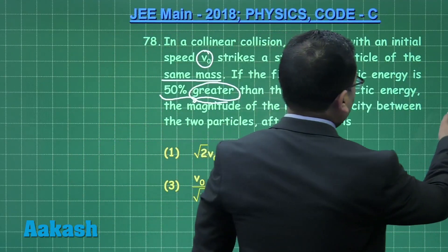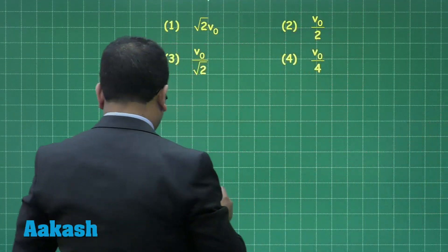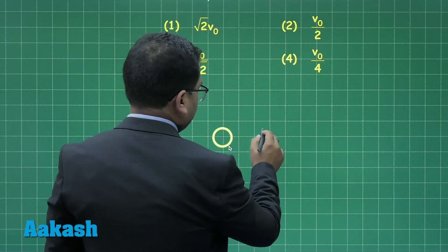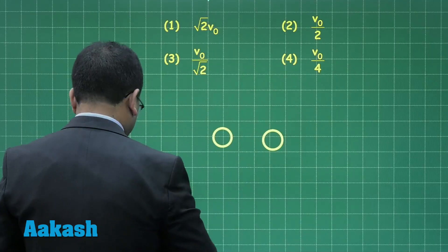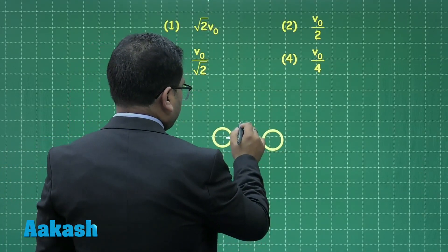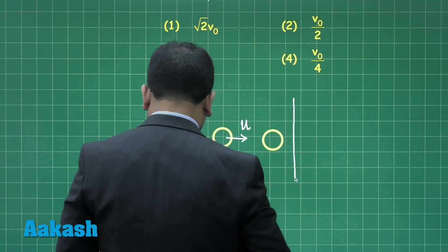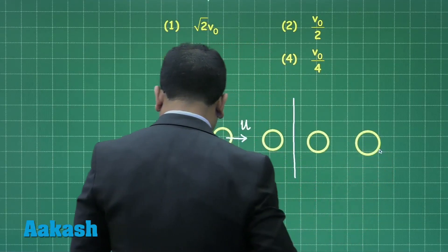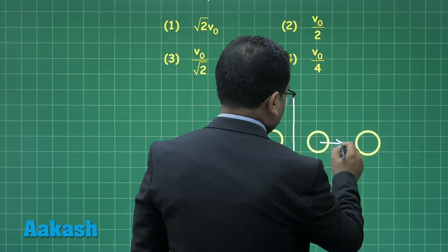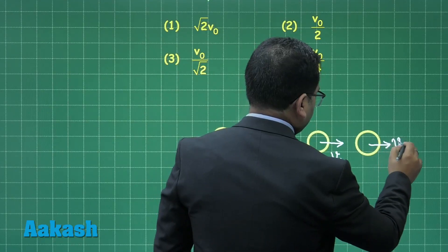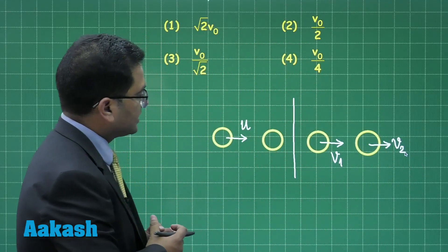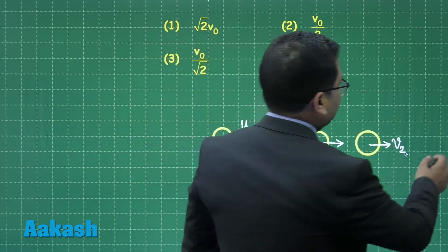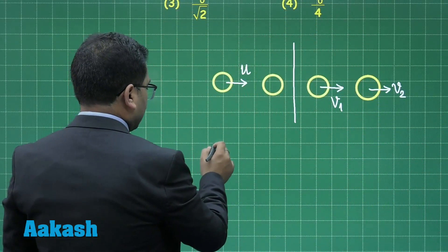Drawing the situation: the first particle has initial speed u (= v₀) and the second is stationary. After collision, the first particle has velocity v1 and the second has velocity v2. The masses are identical, and the final kinetic energy is 50% more than the initial.